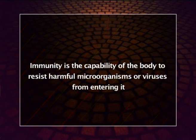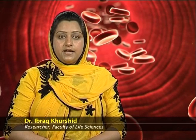In conclusion, immunity is the capability of the body to resist harmful microorganisms or viruses from entering it. This immunity is mainly of two types: innate immune response and adaptive. Innate immunity includes first and second lines of defense, which work together with adaptive immunity to destroy foreign invaders or any antigens that can elicit an immune response. That was all about immunity, its types, and the role of different cell types in innate response. Thank you and goodbye.